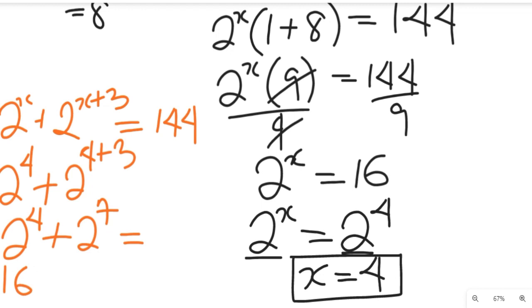2 to the power of 4 will give us 16, plus 2 to the power of 7, which is 2 times 2 times 2 up to 7, and that will give us 128. So when we add this, we arrive at 144.